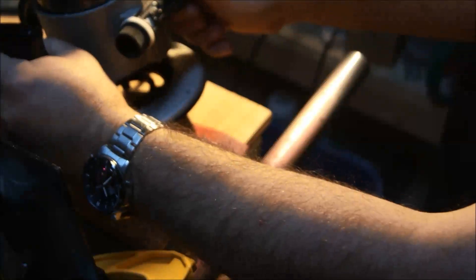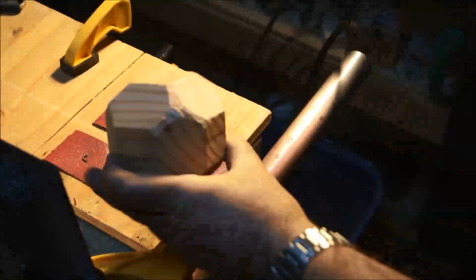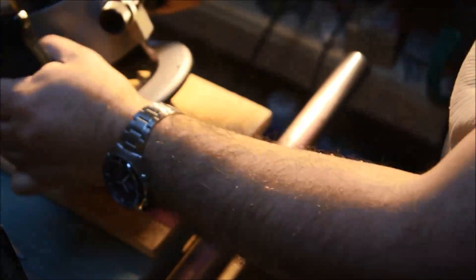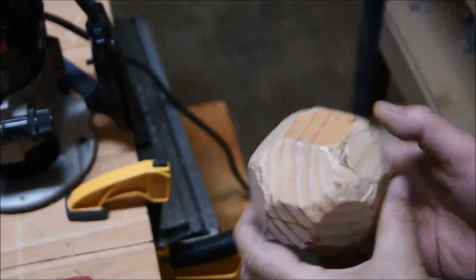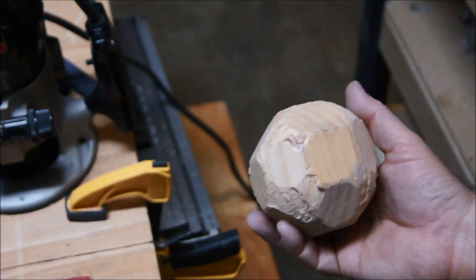We start routing at lower settings, knocking off the corners. This is how it looks after we are done with the first pass.